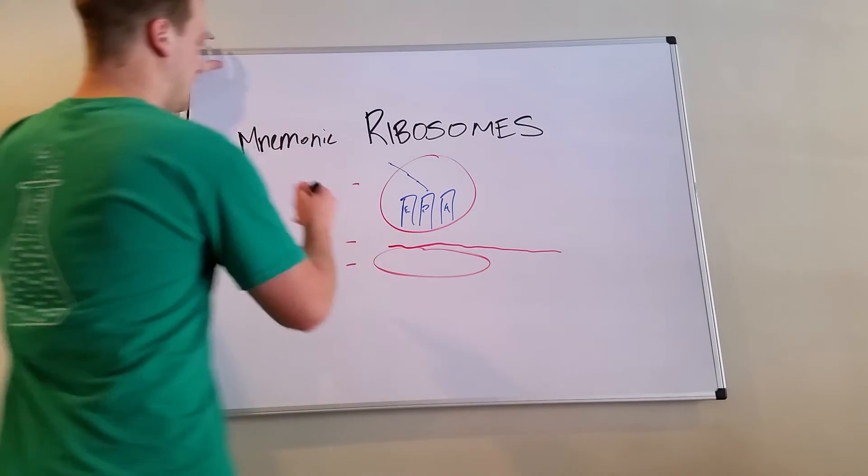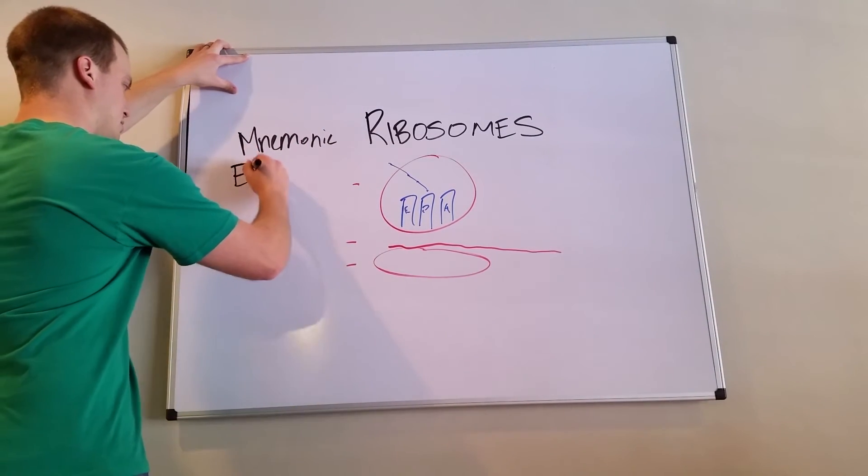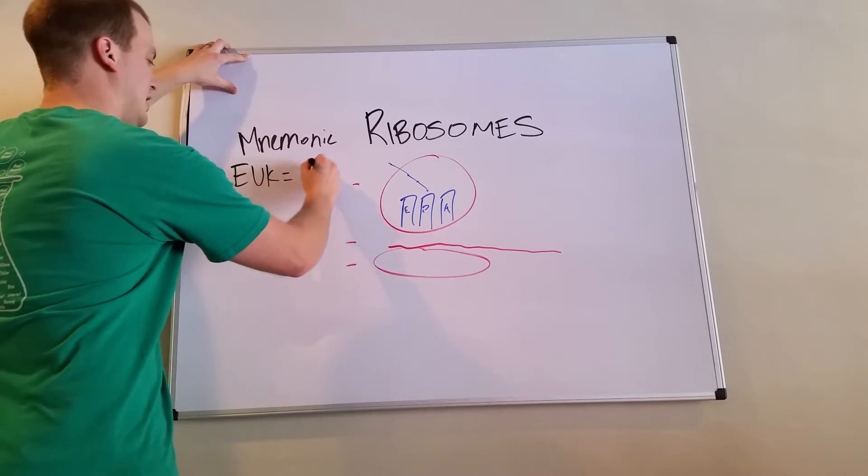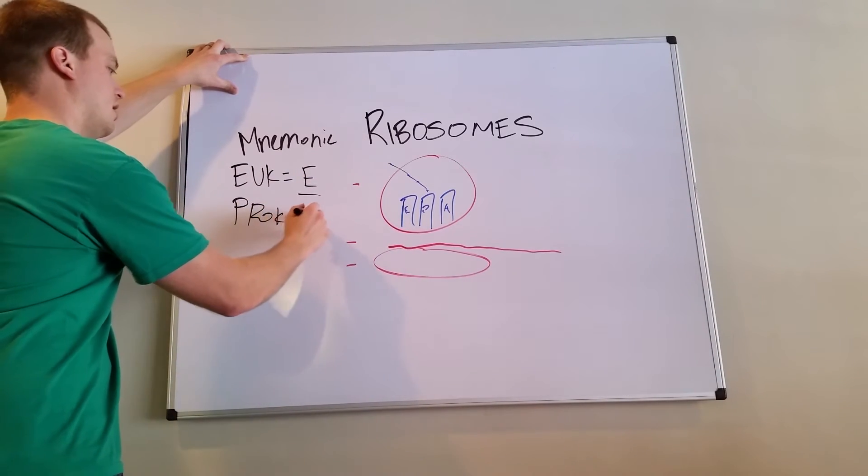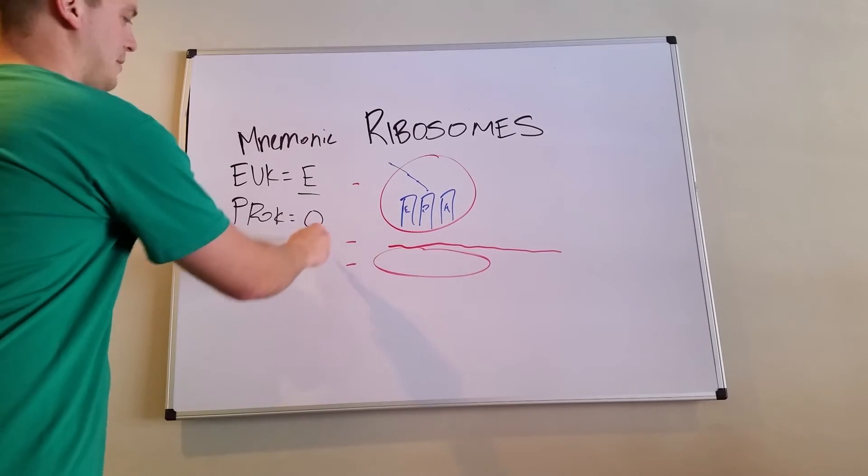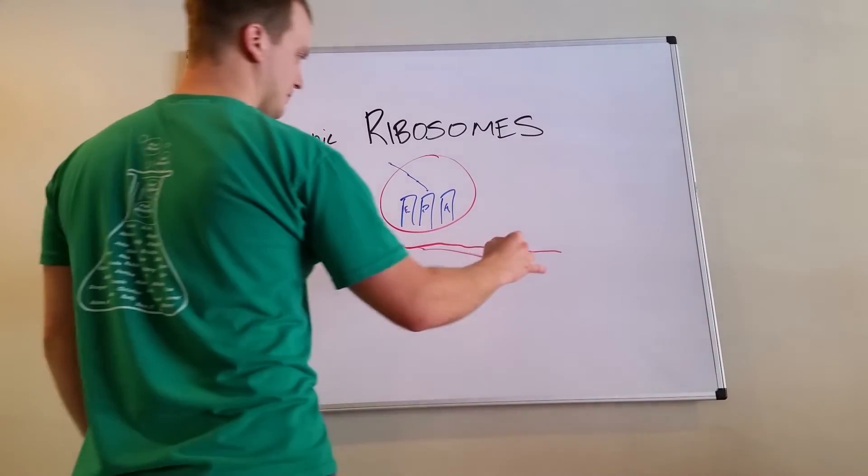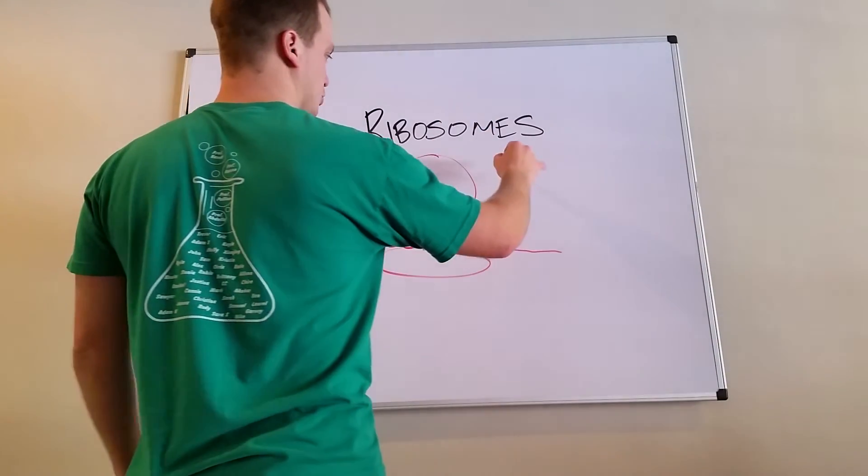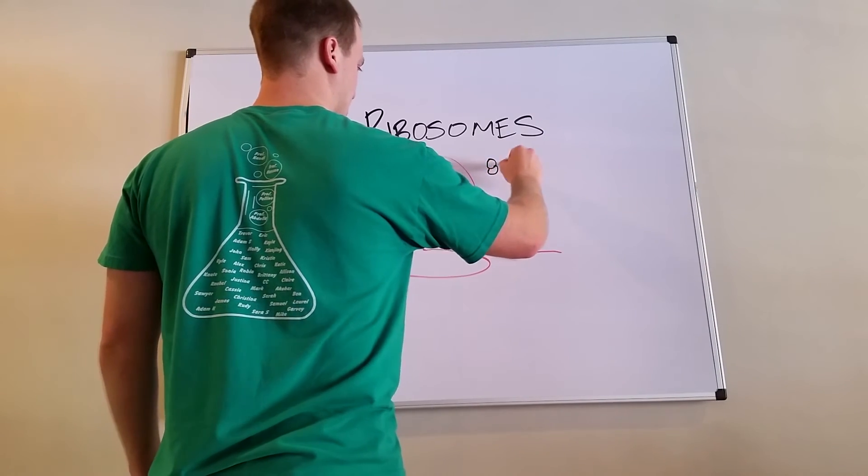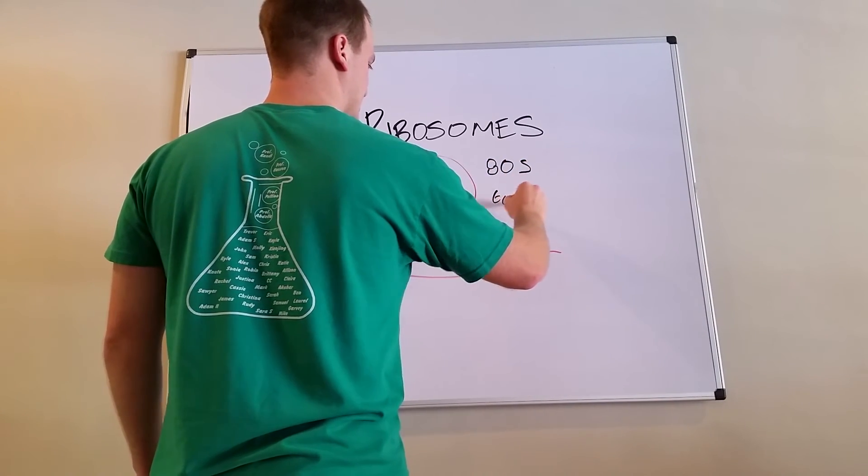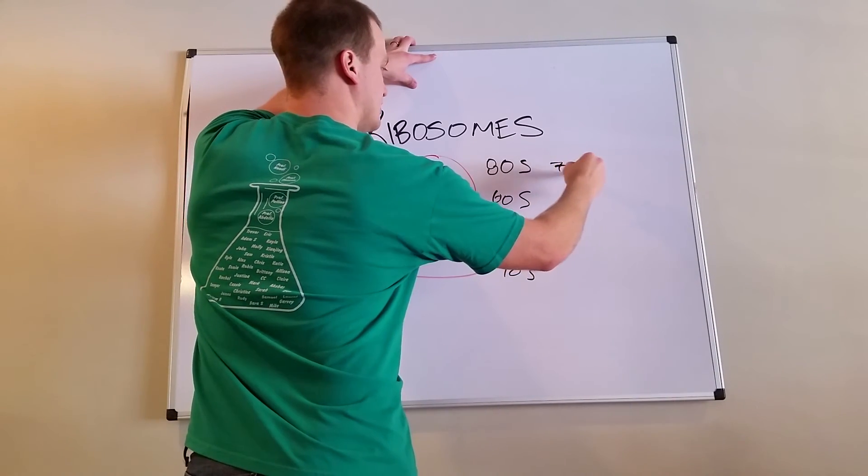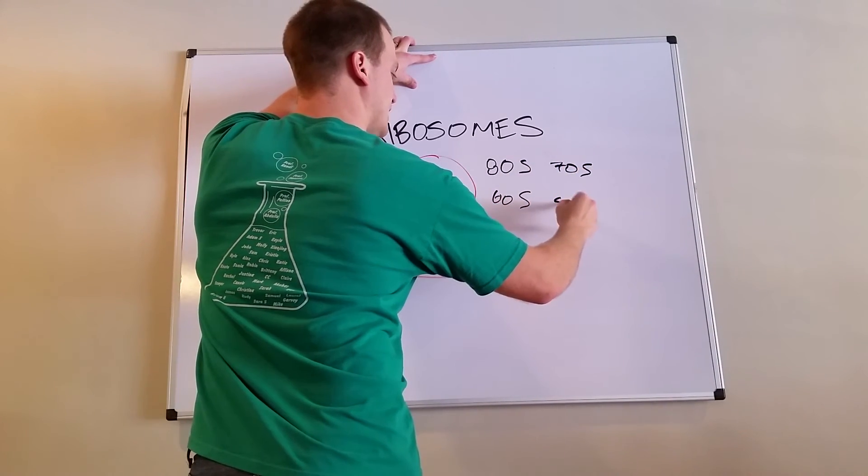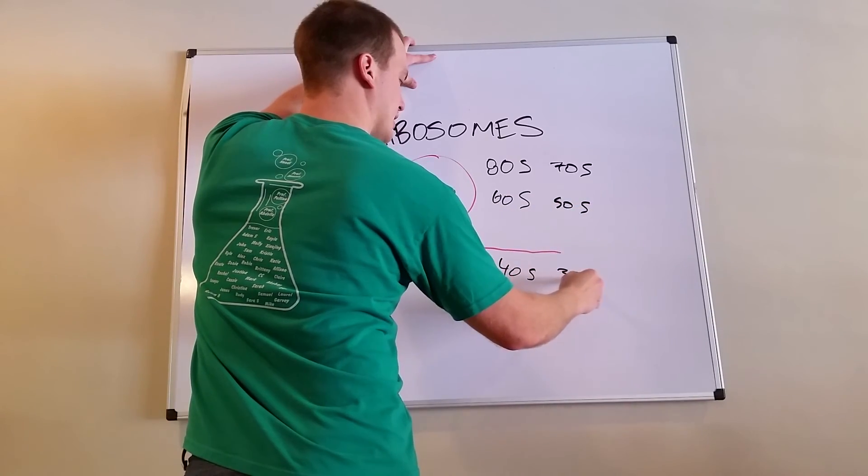Now the eukaryotes are all even. Eukes are even and the prokaryotes are odd. So what does that mean, even or odd? Well there's two different choices here. One is 80S, 60S, and 40S, and the other is 70S, 50S, and 30S.